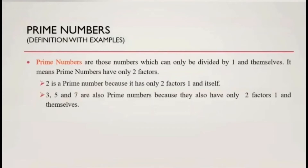Prime numbers are those numbers which can only be divided by one and themselves. It means prime numbers have only two factors. Two is a prime number because it has only two factors: one and itself. Three, five, and seven are also prime numbers because they also have only two factors — one and themselves.